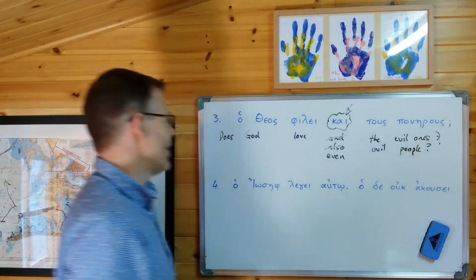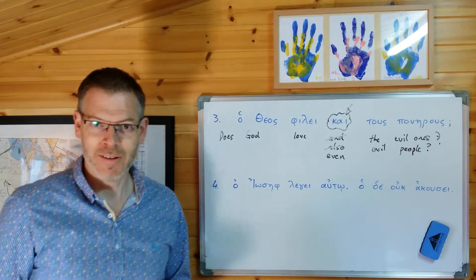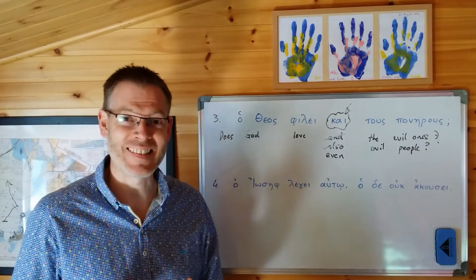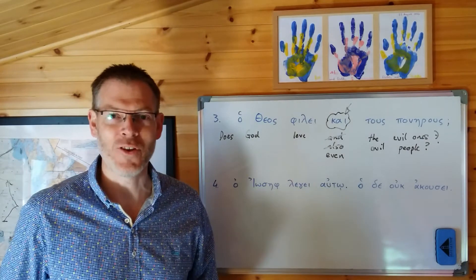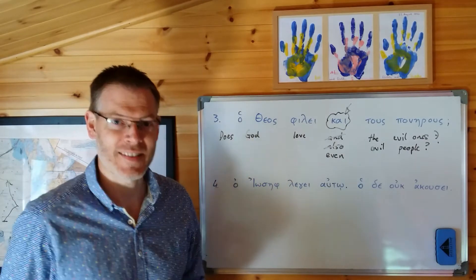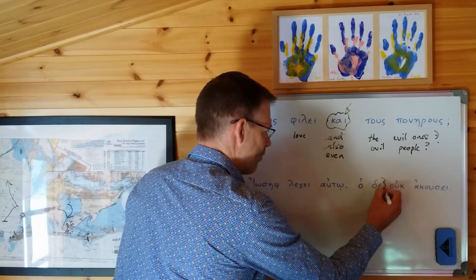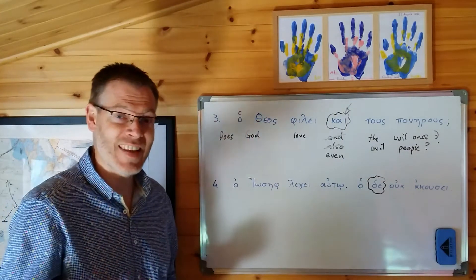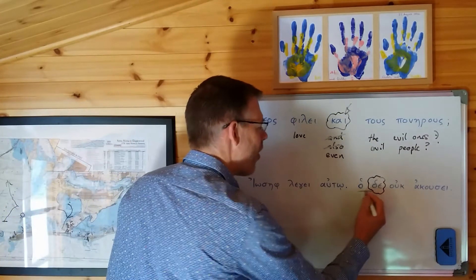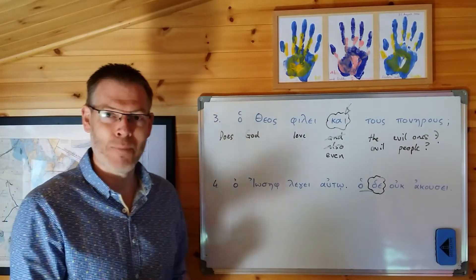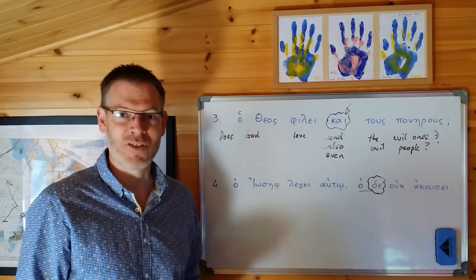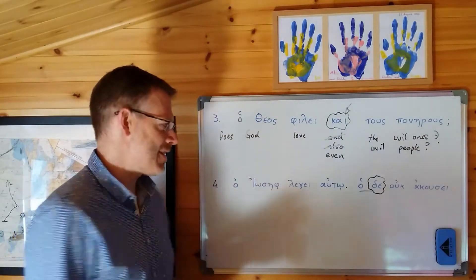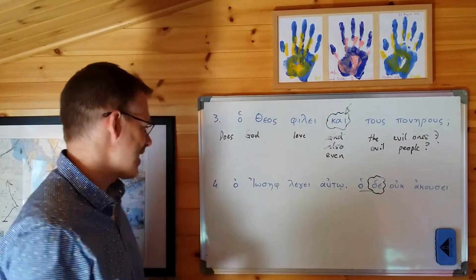And finally, here's a use of de which will be unfamiliar to you, but it's actually quite common and quite significant. It's right here in example number four. It's the use of de along with ho to change the grammatical subject of the verb in the clause. I'll show you what that means as we translate this example.